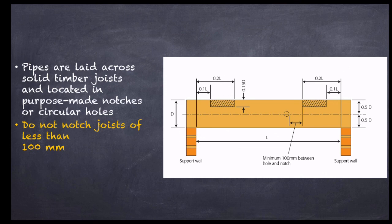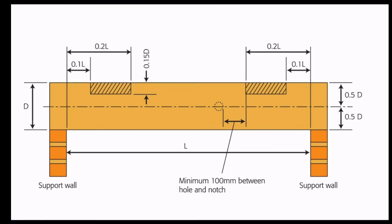Pipes are laid across solid timber joists and located in purpose-made notches — these are notches that you will make — or circular holes that you will drill. An important rule: do not notch joists of less than 100 millimeters. If an exam question gives you a joist depth of less than 100 millimeters, the answer will be that notching is not allowed.